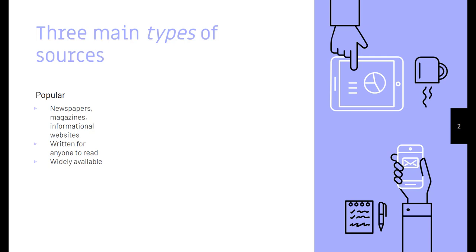You can go online and access the newspaper there. They're published often, so newspapers come out every day, magazines come out weekly. They can be updated quickly, so if there's news right now in Washington D.C., chances are you'll hear about it through various news outlets within an hour. Everything can be updated very quickly in popular sources.